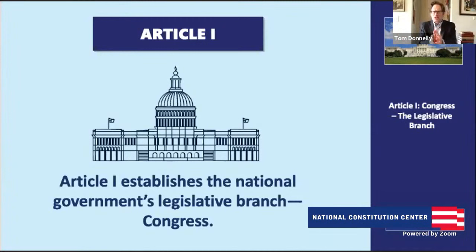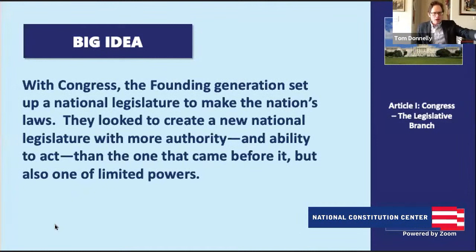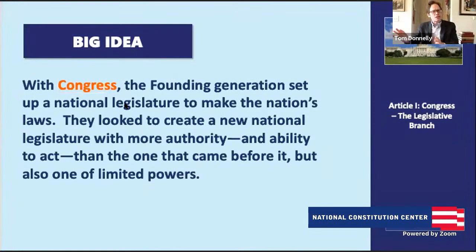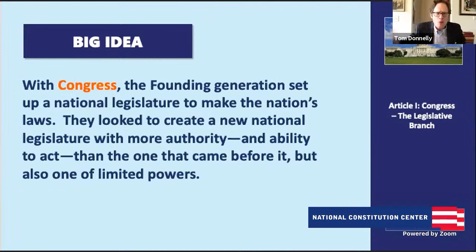When the founding generation looked at Congress, they were really looking in two different directions. On the one hand, they wanted to create a new national government more powerful than what came before — the Articles of Confederation — but also a national government of limited powers. The big question they asked was: what policies really have to be set by the national government versus what do we want to leave to the states? They wanted the states to continue to do a ton. This is our system of federalism — where the national government does certain things, the states do certain things.